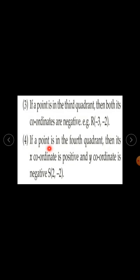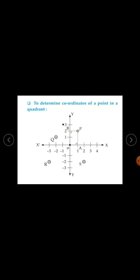If a point is in the fourth quadrant, then its x-coordinate is positive and y-coordinate is negative. For example, for point S, x-coordinate is 2 and y-coordinate is minus 2. So in the fourth quadrant, x-coordinate is positive (2) and y-coordinate is negative (minus 2).